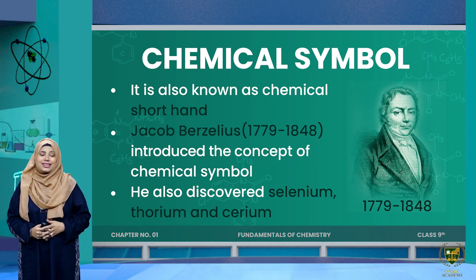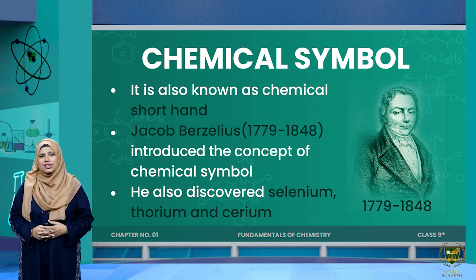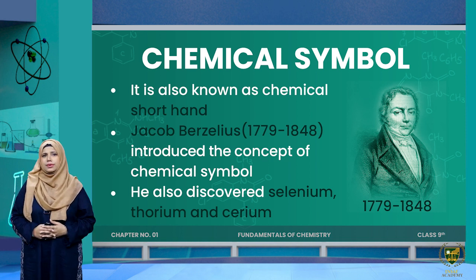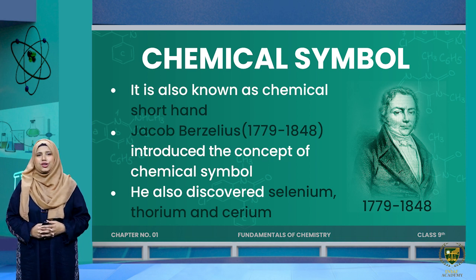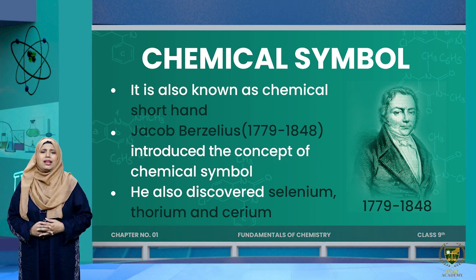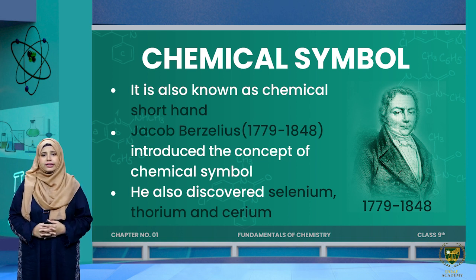These alphabets are called chemical symbols, or chemical shorthand. Since many element names are very complicated, we need a chemical symbol — a shorthand — to represent each element. A scientist named Jacob Berzelius, a Swedish chemist, was the first to introduce the idea of chemical symbols. He gave modern symbols to chemicals and also discovered elements such as selenium, thorium, and cerium. He is a very important scientist in the history of chemistry.